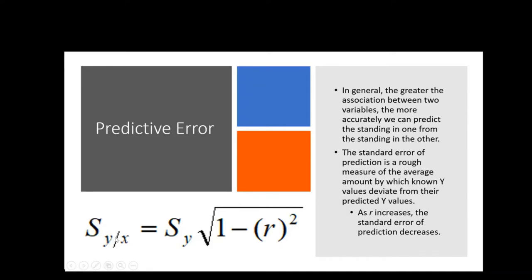Notice that we have some different nomenclature here. This is the standard deviation of y given that we know your x score — not just the standard deviation of y. How we calculate it is we start with the standard deviation of y and then reduce it by a fraction. The reason it's a fraction is that this value will always come out less than one. This represents our error in predicting your grade. If I know nothing about you, I use the standard deviation of grade; but if I know more about you, I can reduce my error by how close the relationship is.